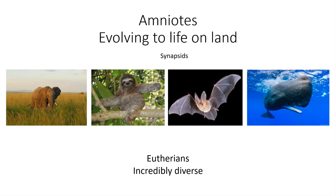Eutherians may not have the diversity of birds, or other arthropods or fish — there are only about 6,000 species of mammals. But these eutherians include things as crazy as an elephant, a whale, a bat, sloths, nine-banded armadillos, even humans, rodents, cats, and dogs. So eutherians are incredibly diverse in their form and their function.